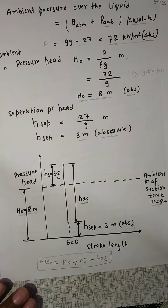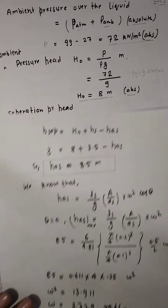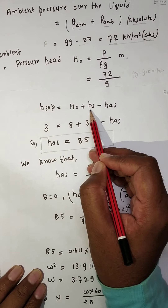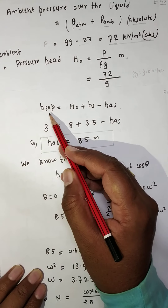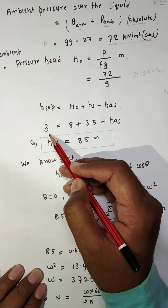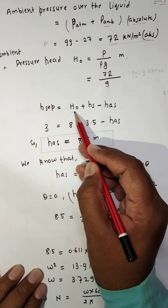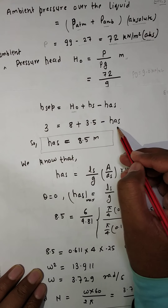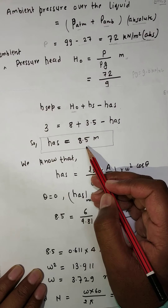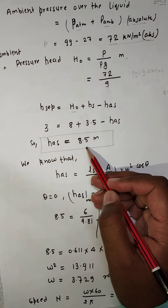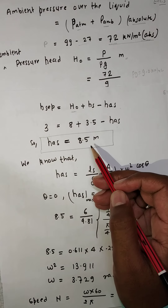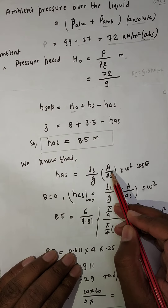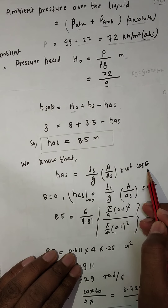So the suppression head equation is: h_suppression = H₀ + h_s − h_s_max. The suppression head value is 3 meters, the ambient pressure head H₀ is 8 meters, and the suction head h_s is 3.5 meters. Therefore, h_s_max = 8 + 3.5 − 3 = 8.5 meters. We know that h_s = (l_s / g) × (A / A_s) × r × ω² × cos θ.